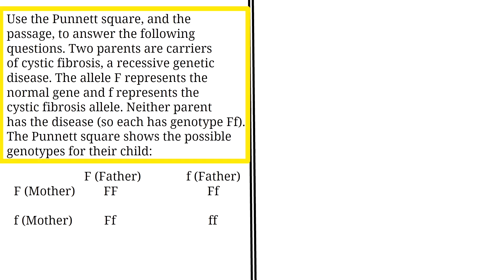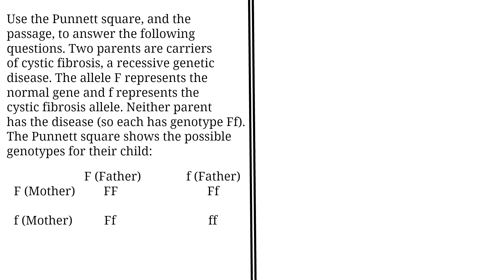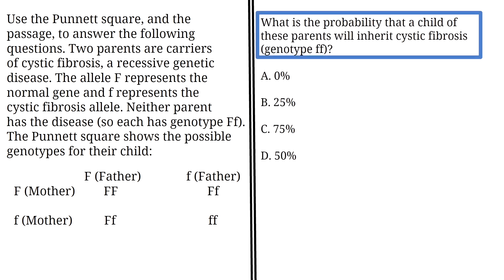Use the Punnett square and the passage to answer the following questions. Two parents are carriers of cystic fibrosis, a recessive genetic disease. The allele F represents the normal gene and lowercase f represents the cystic fibrosis allele. Neither parent has the disease, so each has genotype Ff. The Punnett square shows the possible genotypes for their child. What is the probability that a child of these parents will inherit cystic fibrosis, which is genotype ff?